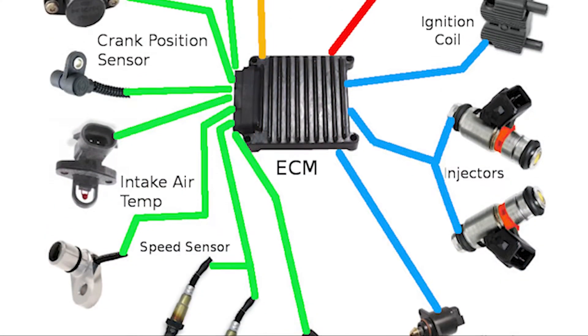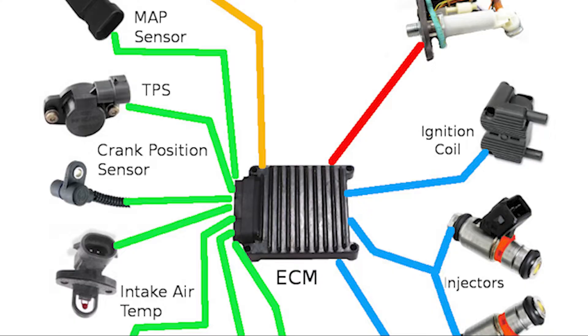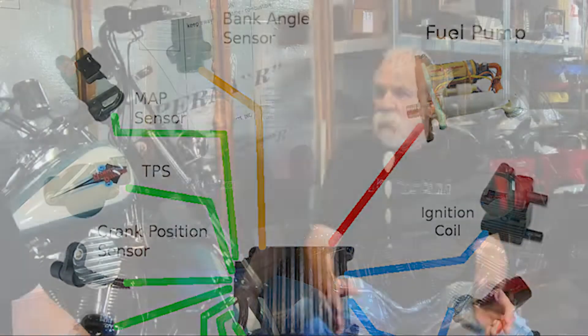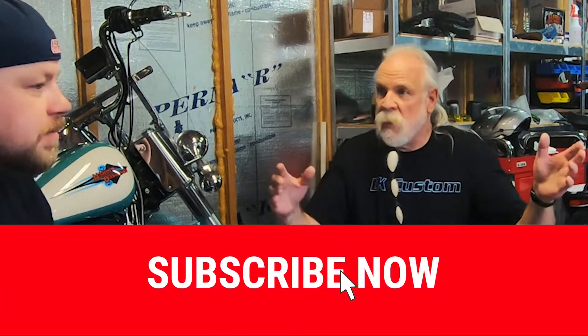The ECM, the electronic control module — there's a lot going on inside that little device. The first thing to know is that it's divided into two sections: open loop and closed loop. Up until 2007, Harley mixed carbureted and fuel injected bikes, but from 2007 forward all Harleys are fuel injected, and they all have both closed loop and open loop.